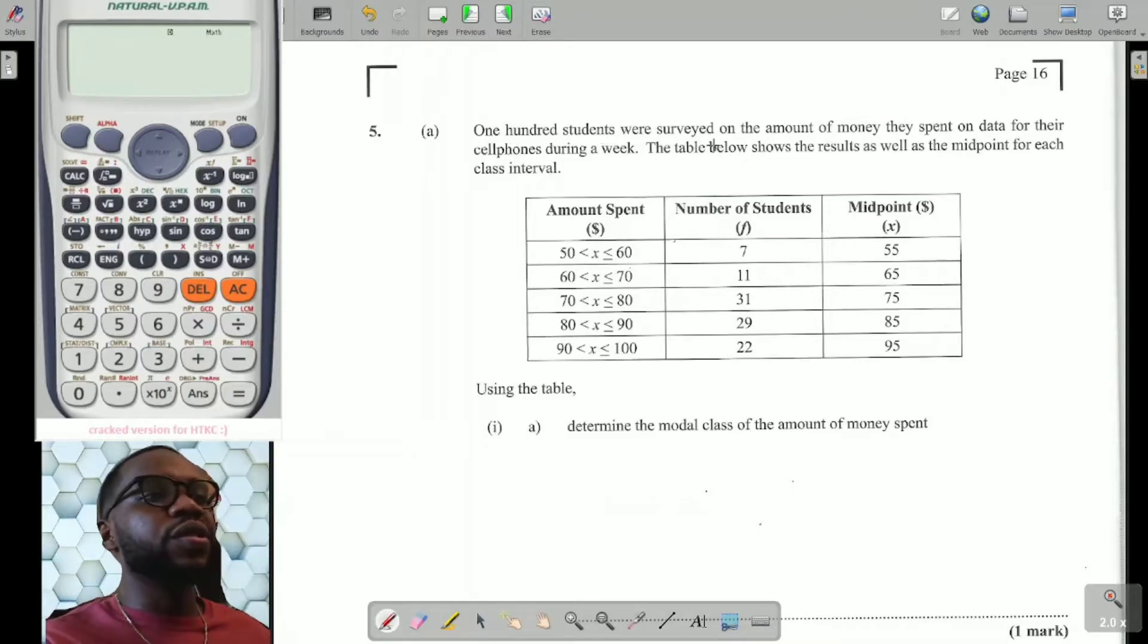It says 100 students were surveyed on the amount of money they spent on data for their cell phones during a week. The table below shows the results with the midpoint for each class interval. We have the amount spent, 50 < x ≤ 60 - this is in money. This is the number of students, also called frequency. And here's the midpoint, which is the midpoint of the amount of money spent.